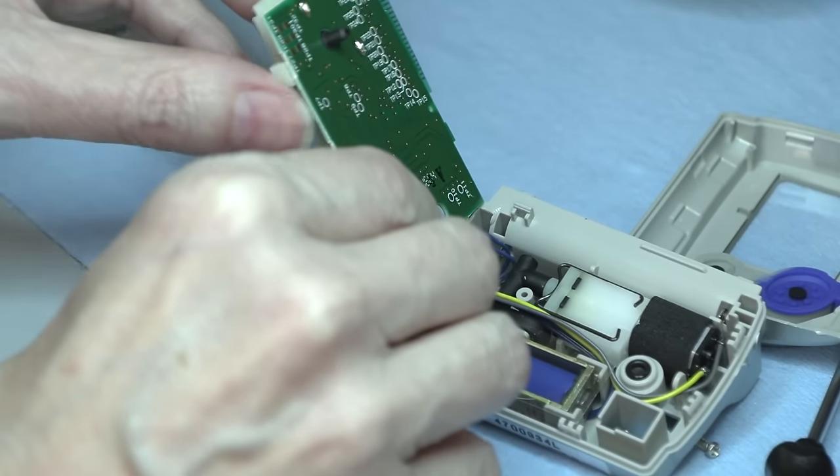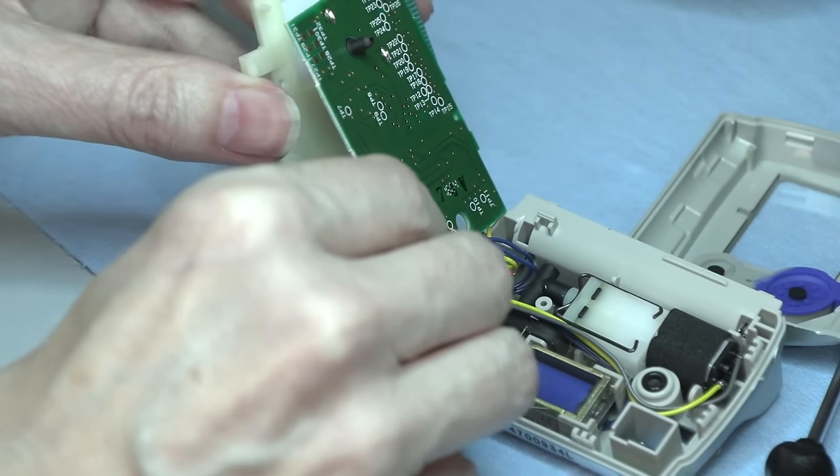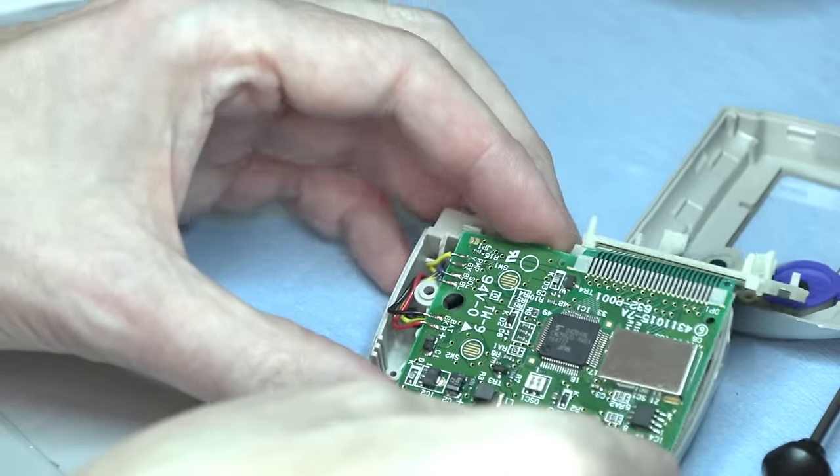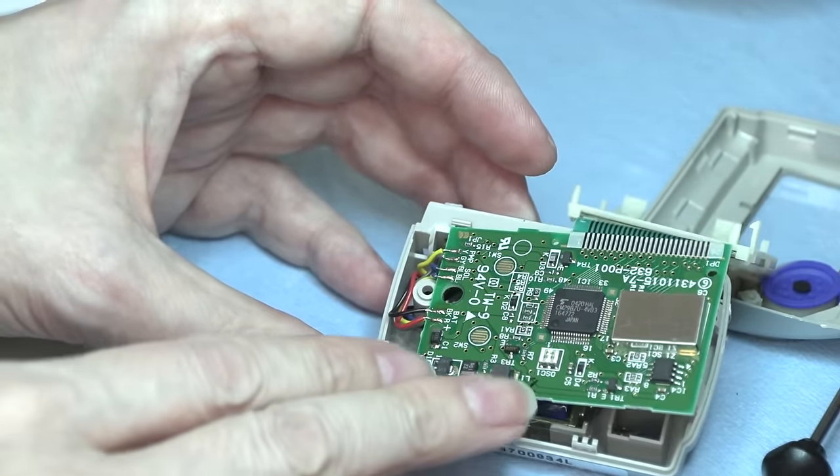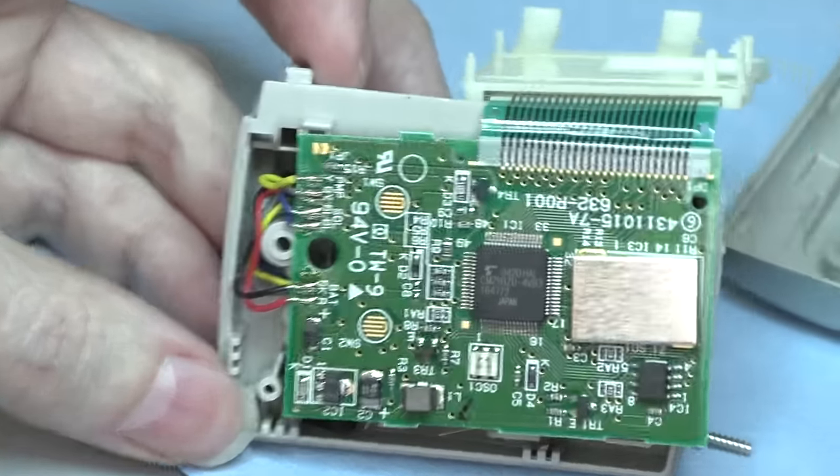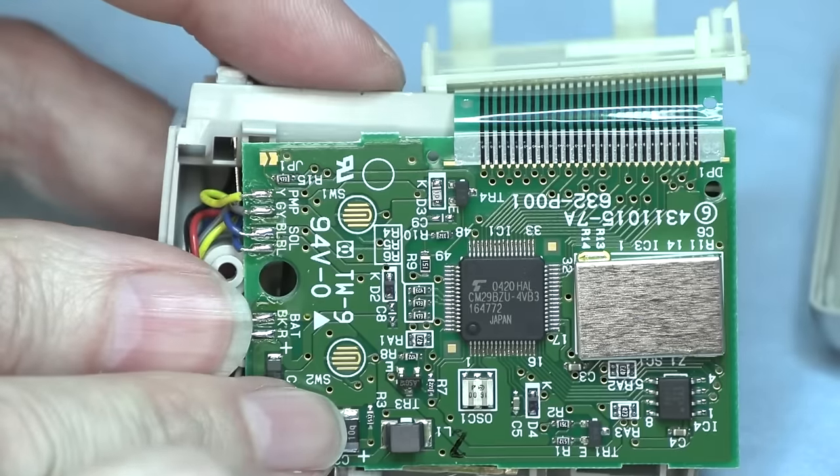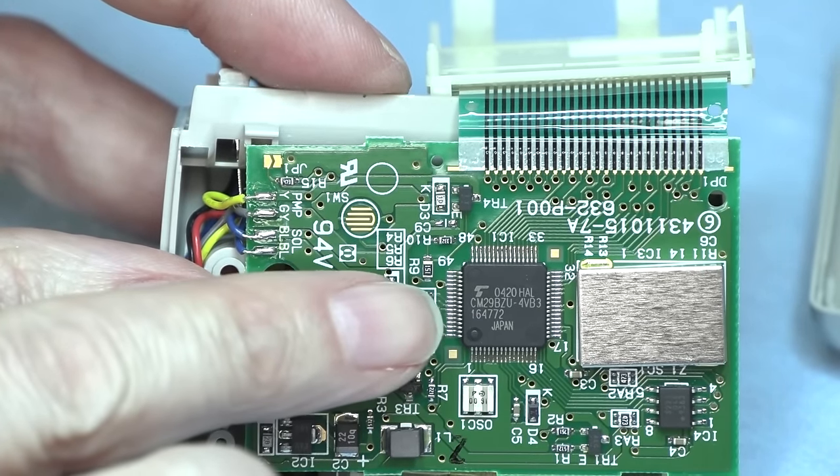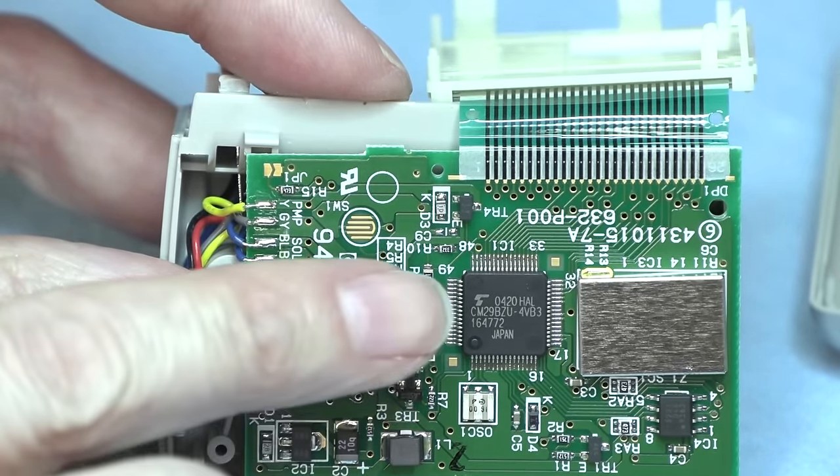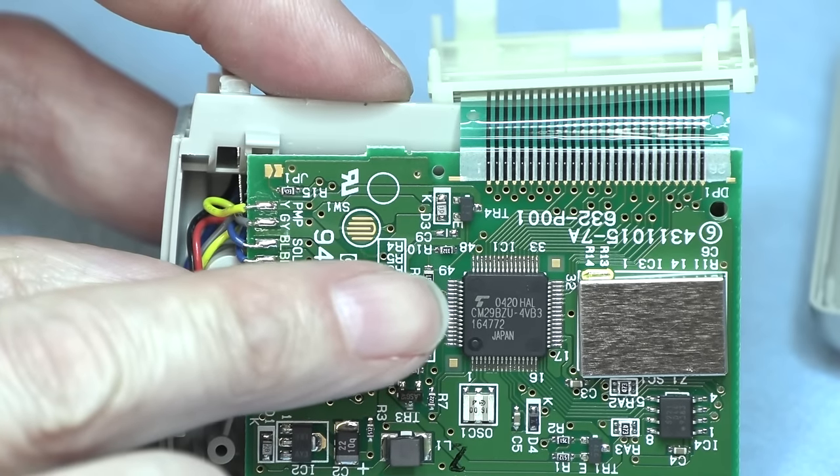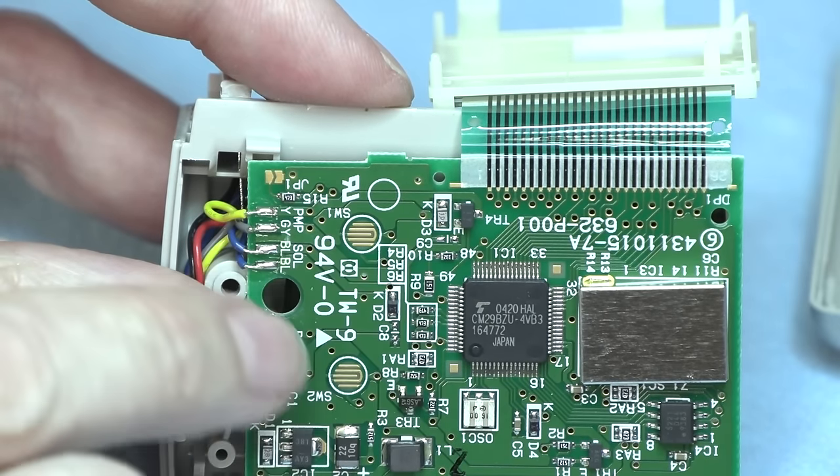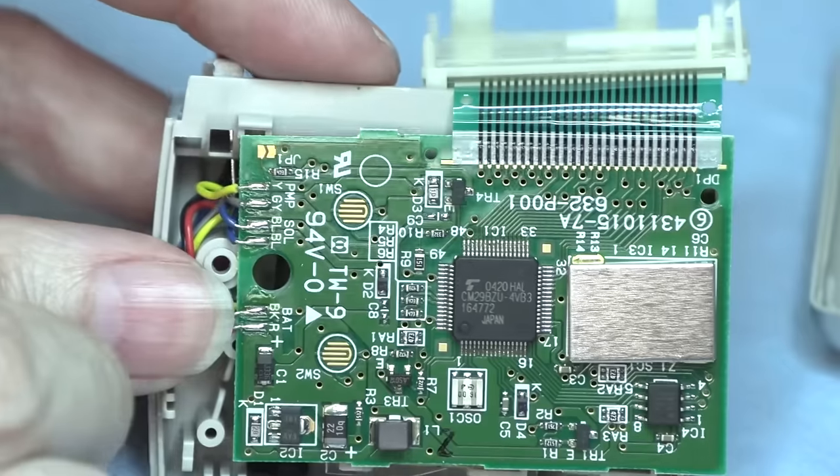Flip the screen around. Oh, wow. Well, it's not chip on board like the potted thing like I thought. It's a little bit more sophisticated. Looks like a CM29BZU 0420. Wow. 2004. I can't be right. Well, maybe it is. I don't know. This would be a lot older than I thought.